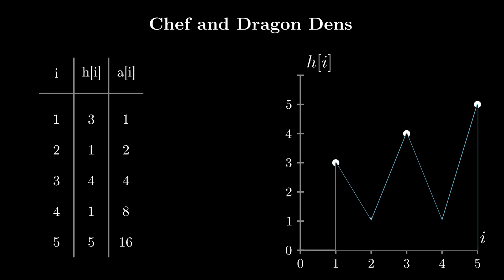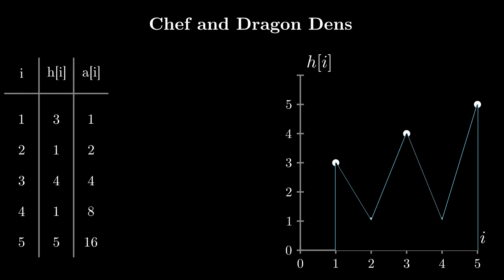A journey between two points can consist of one or more moves as long as the direction of the moves remains constant. The value of a move is the sum of a[i]s of the cities we visit, including the starting and ending cities. A valid journey from 5 to 2 would be from 5 to 3 and then from 3 to 2. However, a journey from 5 to 4 via node 3 is invalid as it changes direction.